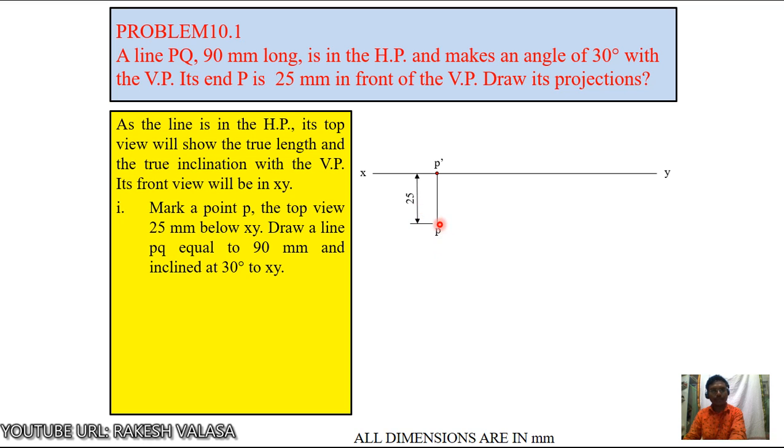From P, the line length is 90mm. This makes an angle of 30 degrees with VP. So from P, draw the 30 degrees inclination line. This line length is 90mm. Mark a point Q. The top view 25mm below the XY. Draw a line PQ equal to 90mm and incline it 30 degrees to XY. This P and this Q.